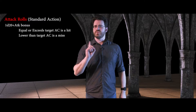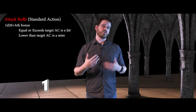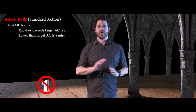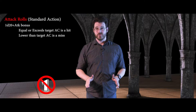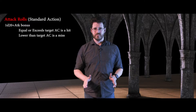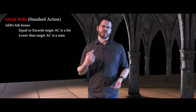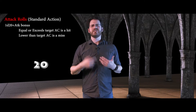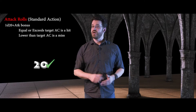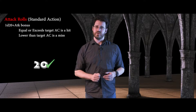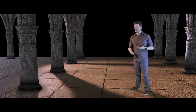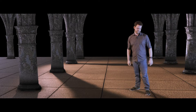If the dice you roll comes up as a 1 — referred to as a natural 1 — it is always a miss, no matter how low your target's armor class is. If the dice you roll comes up as a 20 — referred to as a natural or perfect 20 — it is always a hit, no matter how high your target's armor class is. A 20 is also always a critical threat, and could be a critical hit — we'll get to those shortly.